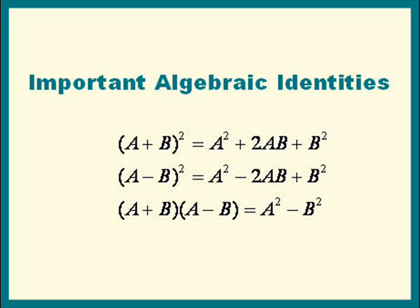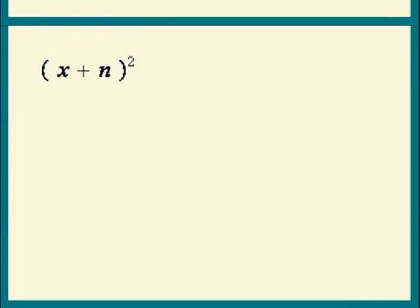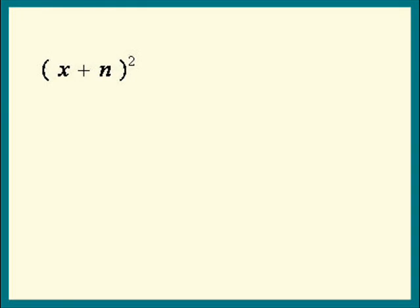When we use the method of completing the square, most of the times we're dealing with x's. So I'm going to square out x plus n where n is a number. What's x plus n squared? It is the first term squared plus two times the first times the second plus the second term squared.